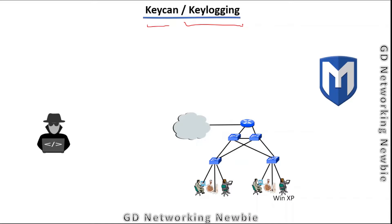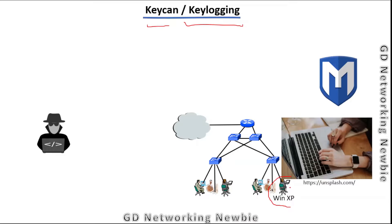So what will happen in this demonstration: once we have exploited some of the systems, some victim machine like this Windows 7, we can use some of the tools and with the help of that keyscan tool, whatever this victim machine user will type, we can see those keystrokes on the screen of our Kali Linux machine.